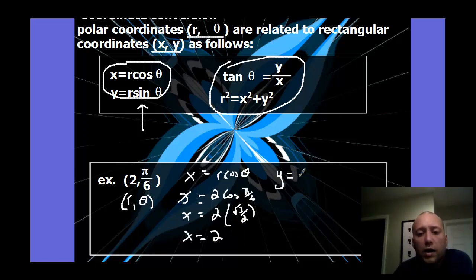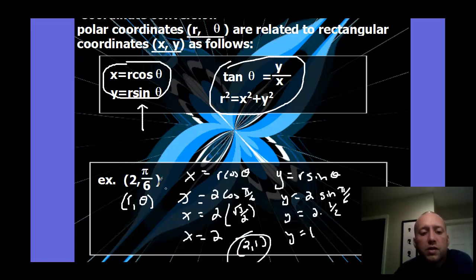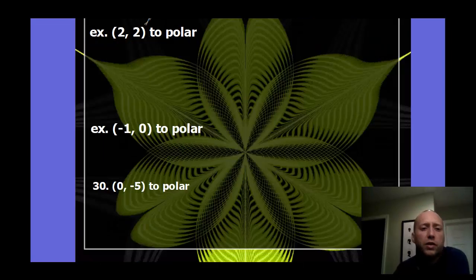You can see how you have to bring back your unit circle values here and still be able to recall those. So our y is r sine theta. So y equals 2 times sine pi 6. Sine pi 6 is 1 half. So 2 times 1 half is 1. So this ends up being the point root 3 comma 1.